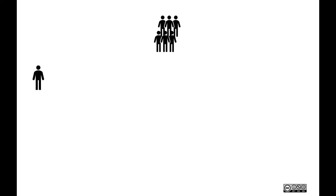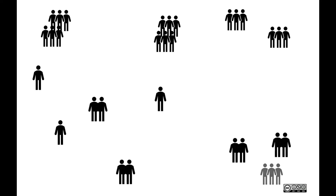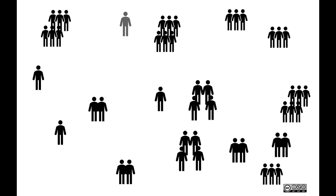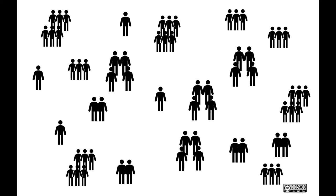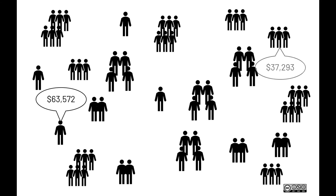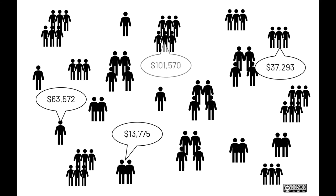When the U.S. Census Bureau wants to figure out how much Americans are earning, they do a survey of households. Some households only have one person, some have a lot of people. They try to collect information from a representative sample of all households in the U.S. Next, they ask how much money everyone in the household earns all together in one year. This is called their annual or yearly household income.